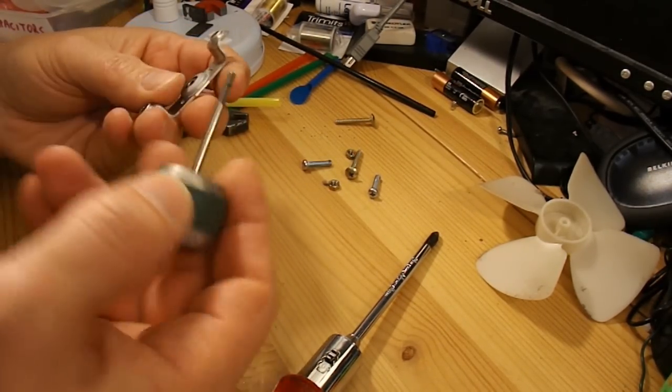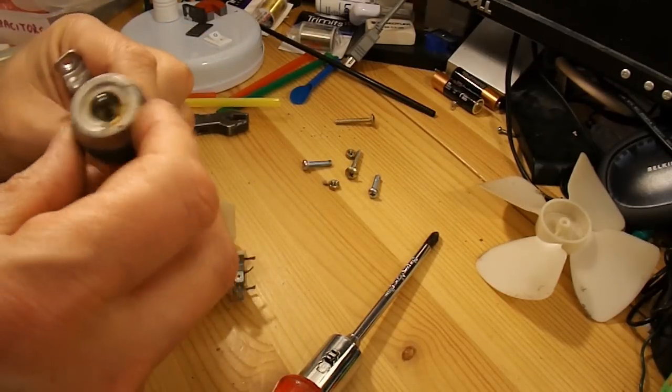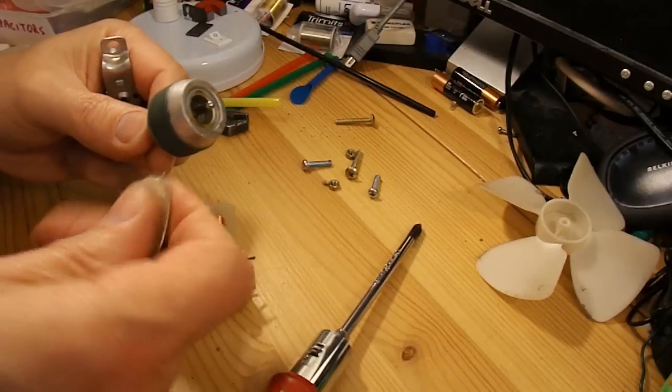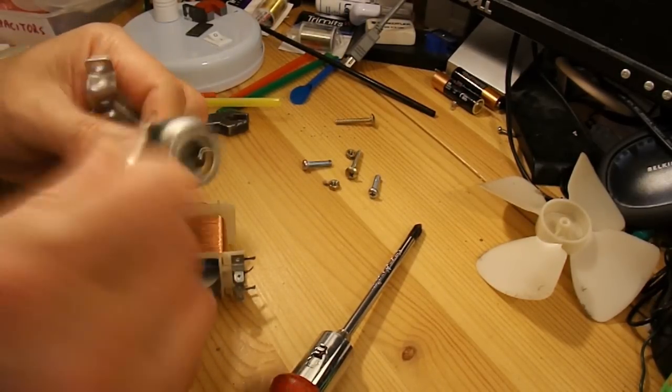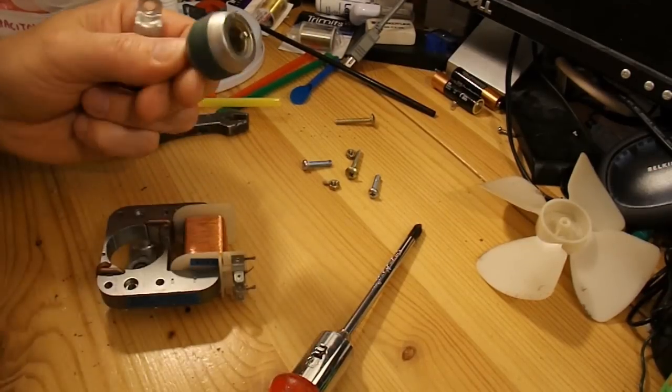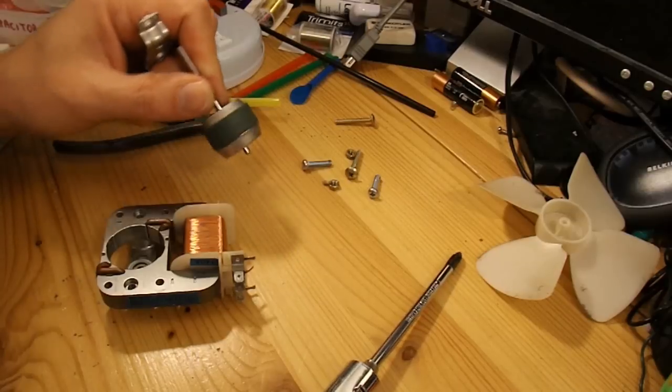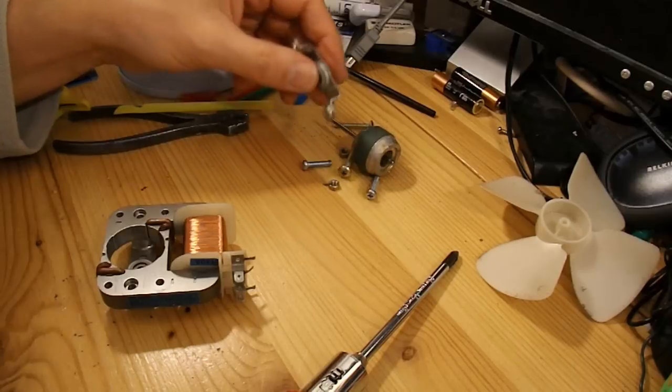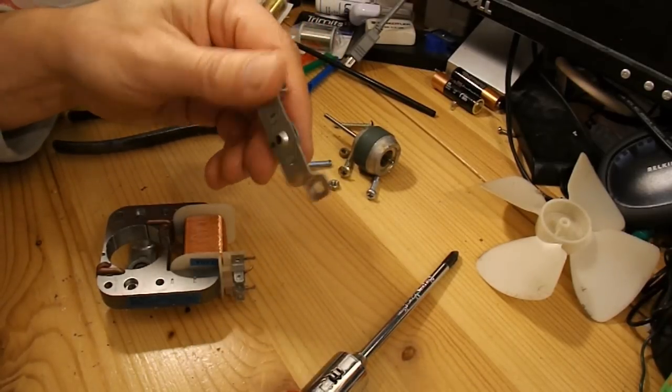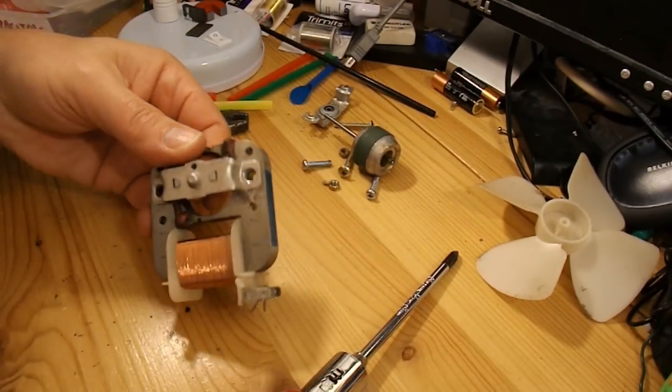Well, I'm sure somebody will be able to tell me what that's made of. It's obviously ferrous of some sort, because the magnet sticks to it, but it's not actually magnetic itself. And as I say, we've got some nice bearings there, so that should be useful for some other project.